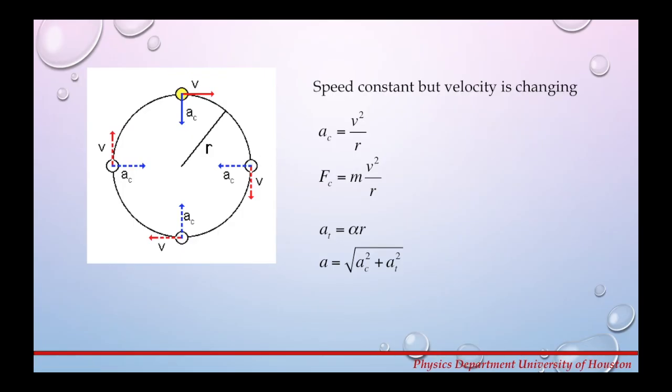Now from Newton's second law of motion we know that the force is equal mass times the acceleration. So then the magnitude of centripetal force is going to be given by this equation m times v squared divided by r.